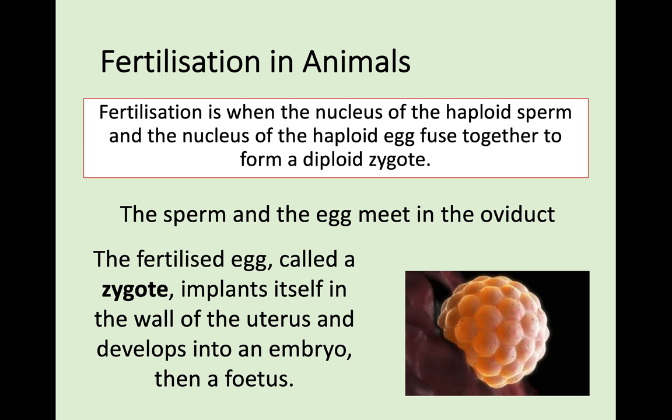Finally, we'll look at the process of fertilization — it's important to know this definition. Fertilization is when the nucleus of a haploid sperm and the nucleus of a haploid egg fuse together to form a diploid zygote. It's important to remember it's not just a sperm and egg colliding — it's the nuclei that fuse, combining all that genetic information passed on through the gametes. The actual site of fertilization is in the oviduct, sometimes called the fallopian tubes, and that is where the sperm and egg meet.